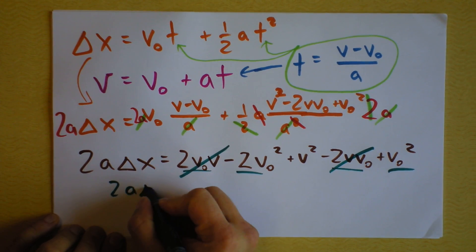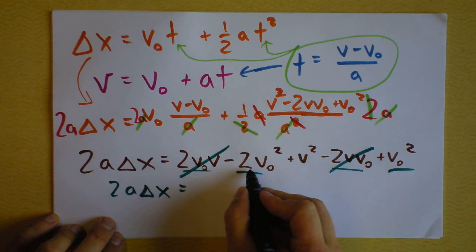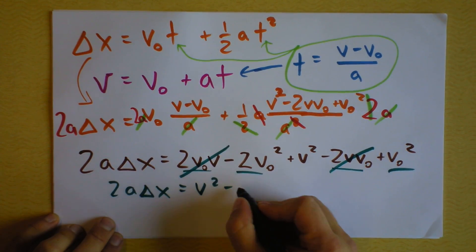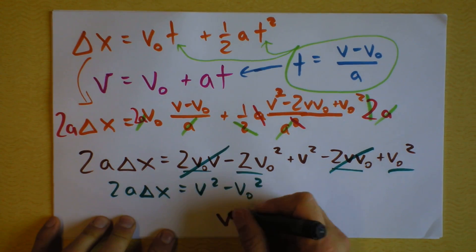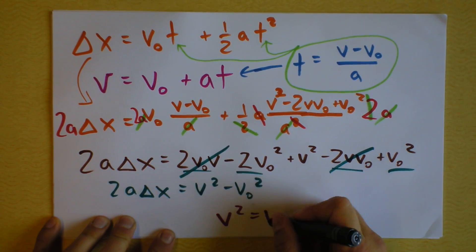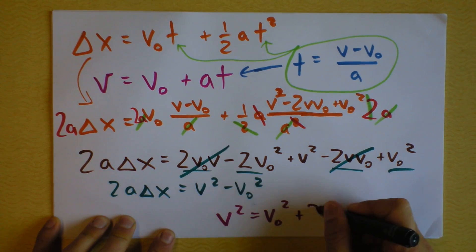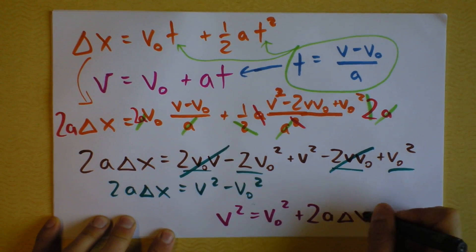So, when it all is said and done, I get 2 times a times Δx equals... Let's see. We said we'd get one of these, but it'd be negative. So, I'm going to write the v squared and then subtract the v-naught squared. I'm going to add this v-naught squared to both sides and switch the order of the two sides so that I get my final result. This is v squared equals v-naught squared plus 2a Δx.